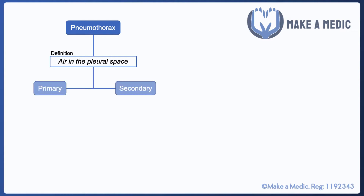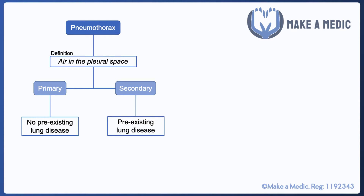When that vacuum seal gets compromised by an air leak, it leads to essentially the collapse of the lungs. Pneumothorax can be defined as either primary or secondary. Primary occurs with no pre-existing lung disease, whereas secondary occurs due to the presence of some sort of pre-existing lung disease, such as COPD.